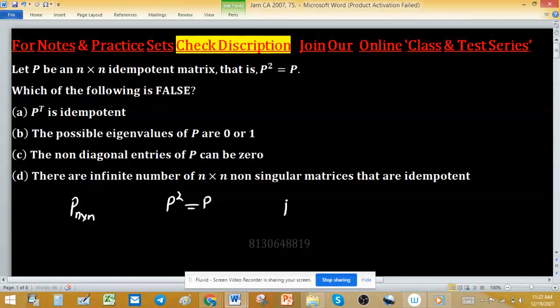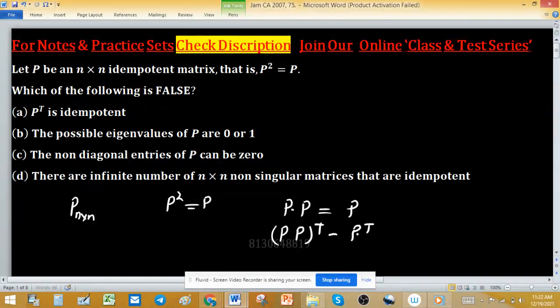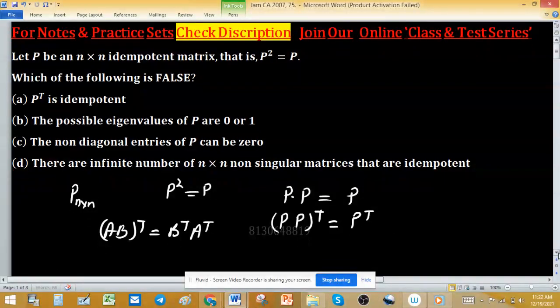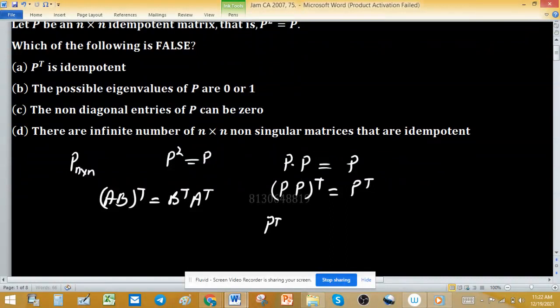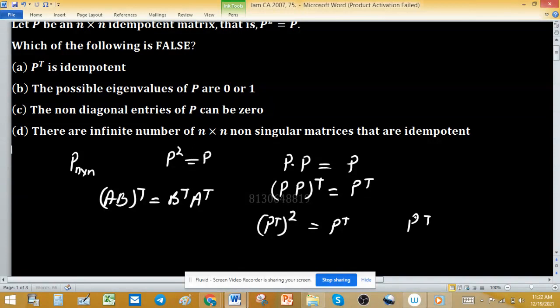As P square equals to P, it implies that P dot P equals to P. Taking transpose on both sides, P P transpose equals to P transpose. We know that AB transpose equals to B transpose A transpose, so transpose comes in reverse order. Therefore, P transpose square equals to P transpose, meaning P transpose is idempotent. So option A is true and not our desired answer.